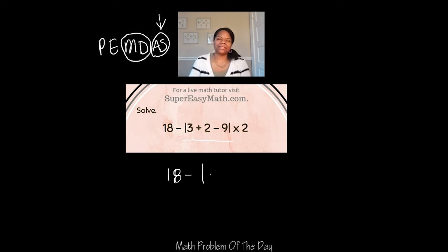So now I'm going to rewrite the problem. But instead of writing the absolute value portion the way it was given, I'm going to write what all of that equaled, which was the negative 4 times 2. Now, I want to follow the rules of absolute value and realize that this is telling me to make this a positive 4.